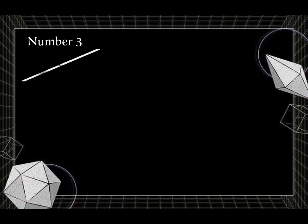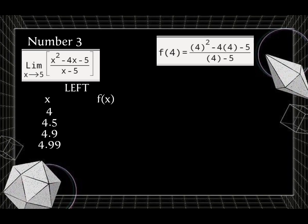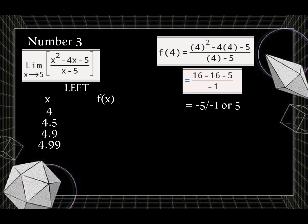Number 3: the limit of (x squared minus 4x minus 5) over (x minus 5) as x approaches positive 5. We will use the table of values to determine our limit. We start from the left side. For x, we have 4, 4.5, 4.9, and 4.99. To get f of x, we substitute the values of x. f of x equals (x squared minus 4x minus 5) over (x minus 5). So f of 4 equals (4 squared minus 4 times 4 minus 5) over (4 minus 5). Evaluate: we get negative 5 over negative 1, or positive 5.